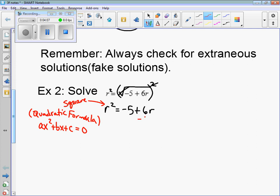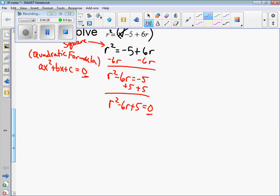So subtract 6r from both sides. Get r squared minus 6r equals negative 5. Add 5, you could have done this all in one step. r squared minus 6r plus 5 equals zero. So we have an equals zero. That's what you want. Now we need to look at a, b, and c. a is 1, b is negative 6, and c is a positive 5.